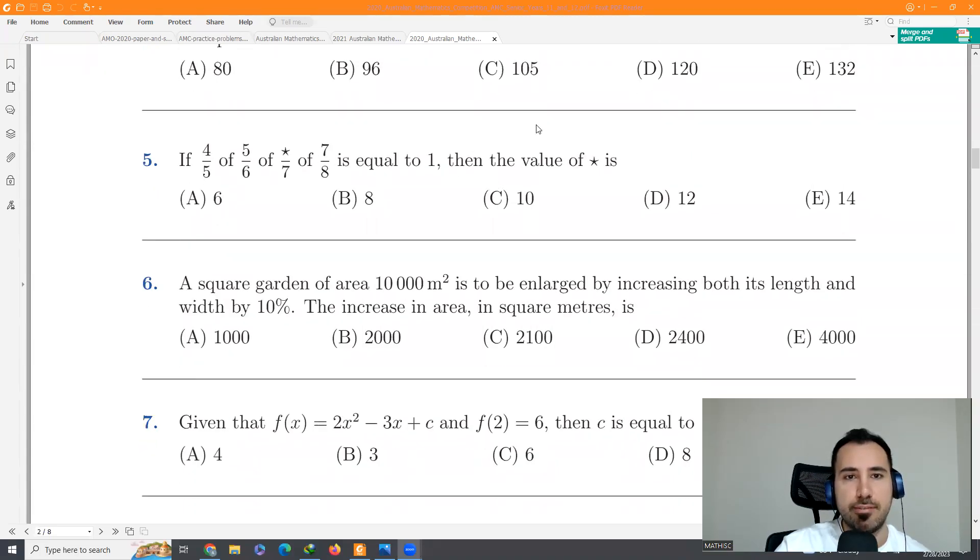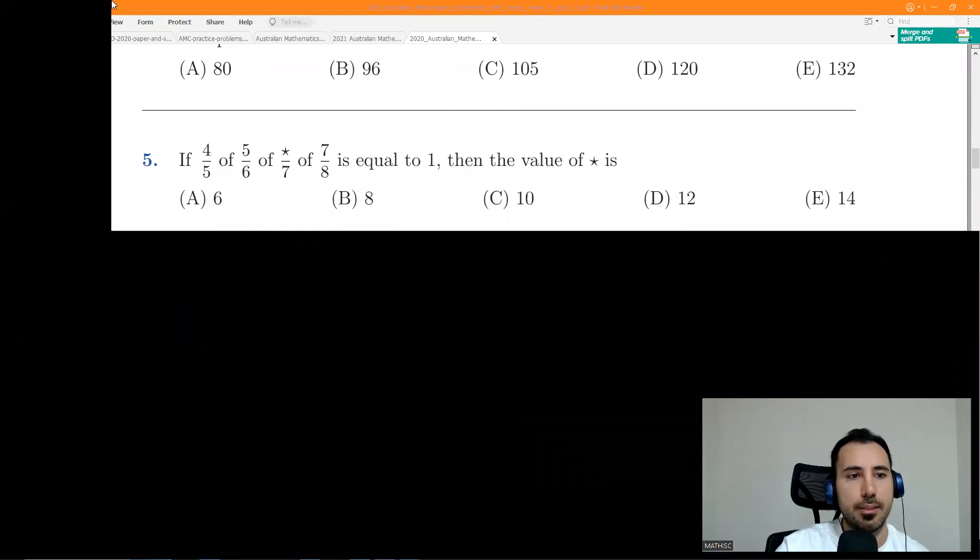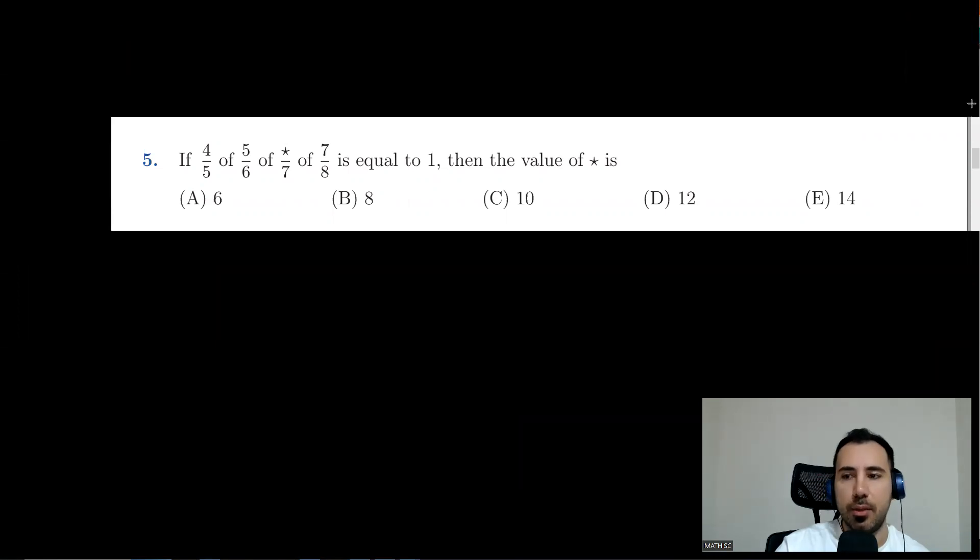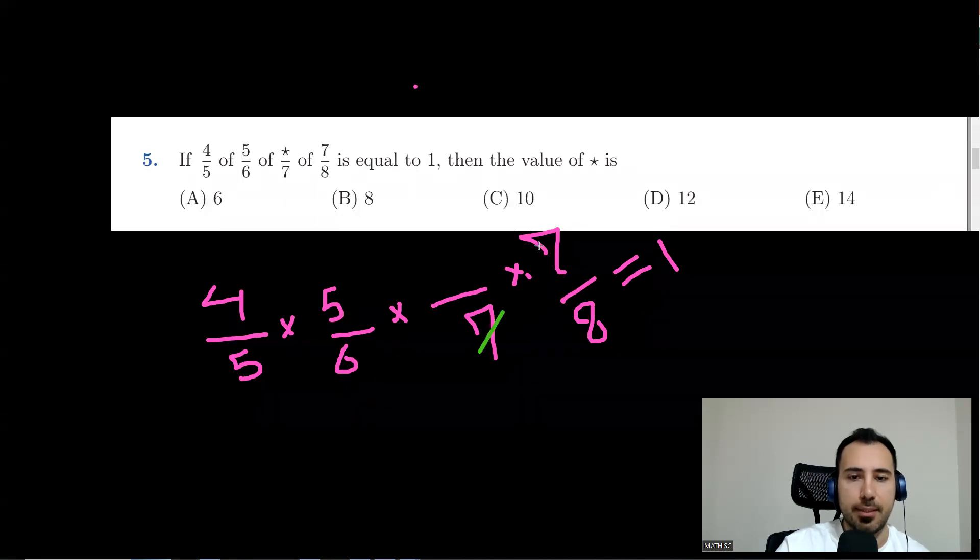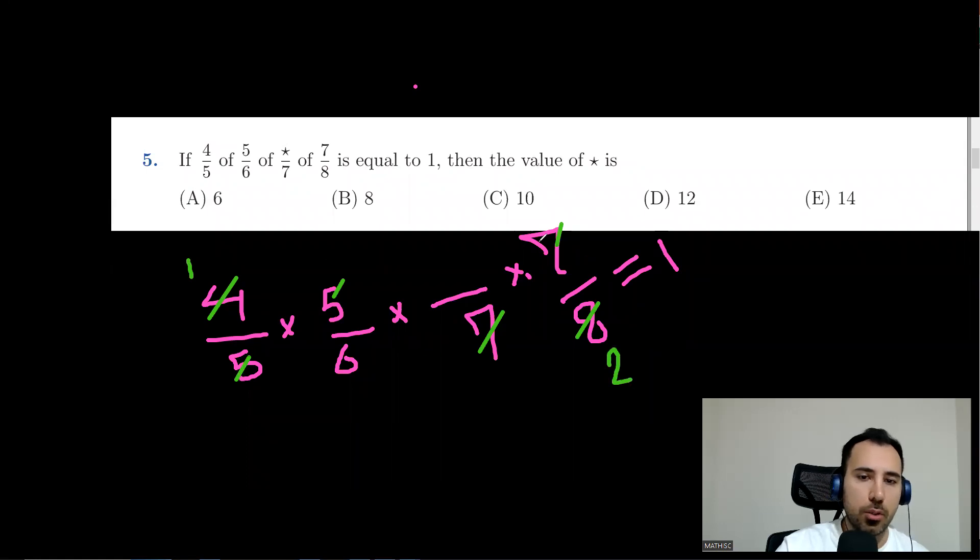Question five is asking us when we have 4/5 of 5/6 of 7/7 of 7/8. We know that when we have of, they're just multiply. So 4 multiply by 5, multiply by 5 over 6, multiply by 7 over 7 over 8. This is supposed to be 1. Let's start simplifying. This 7 and 7 are gone. This 5 and 5 are gone. And we could also simplify. This would be 1 and this would be 2. You see, all the numerators are gone. We only have this number. But denominators, the 6 is safe and sound.